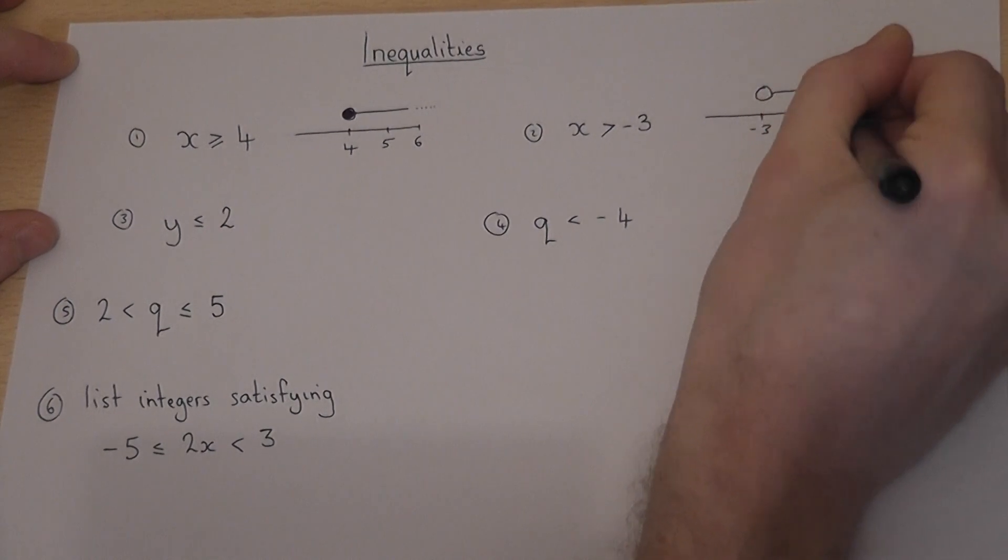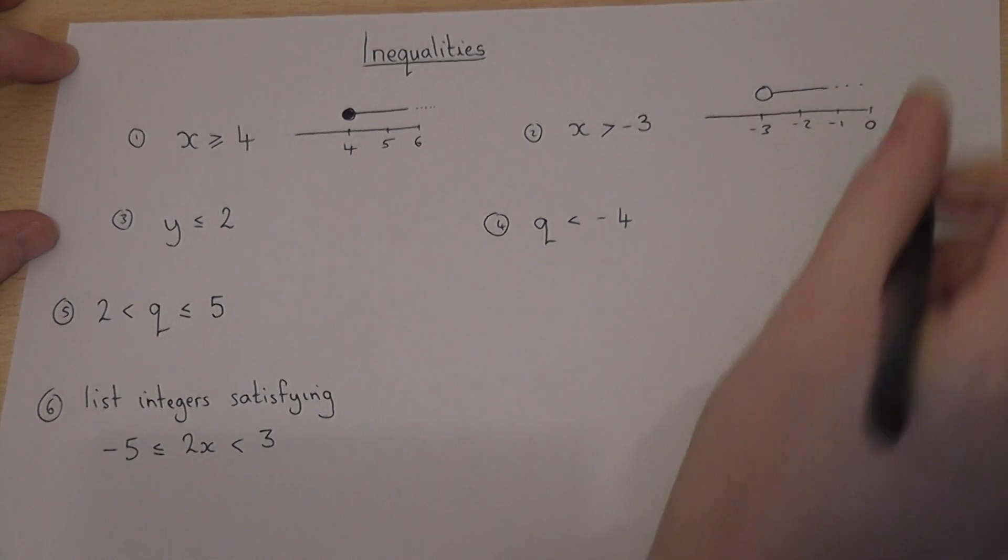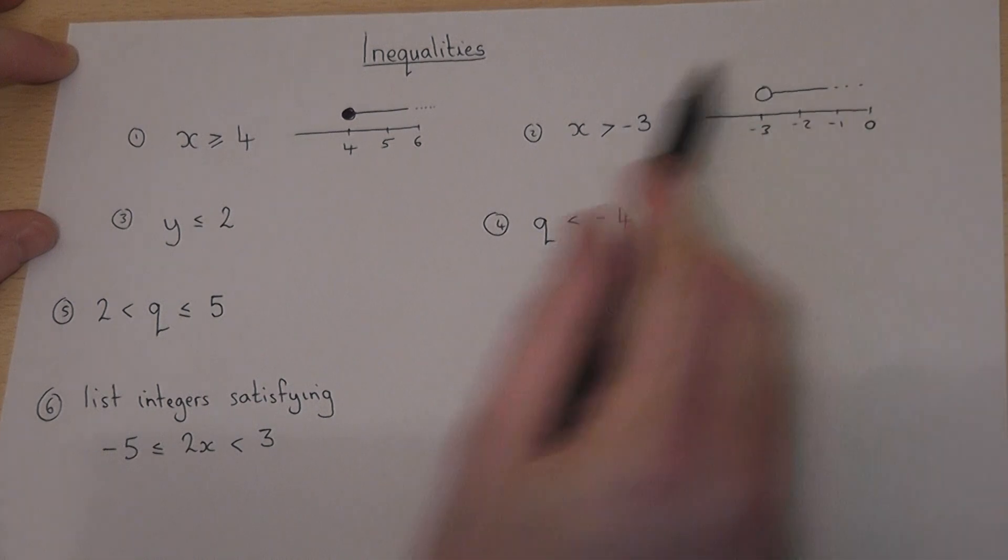So minus 2, minus 1, 0, any number larger than but not included.